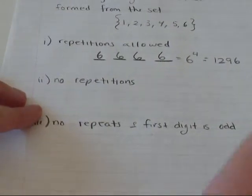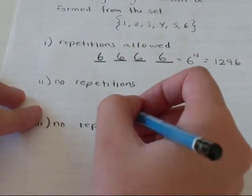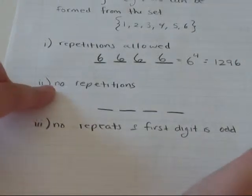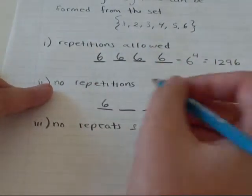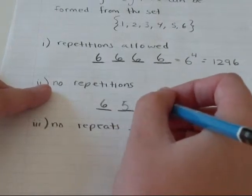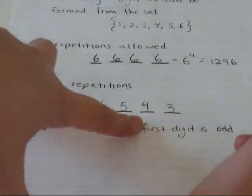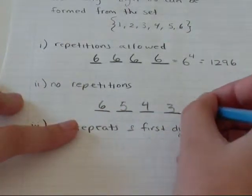In part two, no repetitions. I'm going to draw my four spaces again. In the first slot, I have six choices. No repetitions, so then I have 5, 4, and 3. And 6 times 5 times 4 times 3 equals 360.